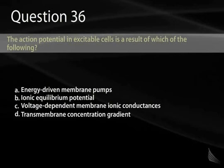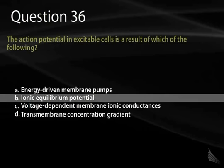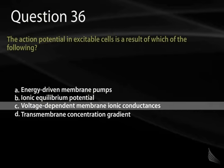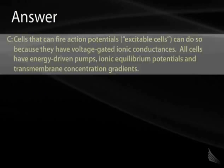Question 36. The action potential in excitable cells is a result of which of the following? A, energy-driven membrane pumps. B, ionic equilibrium potential. C, voltage-dependent membrane ionic conductances. Or D, transmembrane concentration gradients? The correct answer is C. Excitable cells are excitable specifically because they have voltage-gated sodium channels, which are found only on skeletal muscle, cardiac muscle, and neurons. The other three options — energy-driven pumps, ionic equilibrium potentials, and transmembrane concentration gradients — exist in all cell types regardless of excitability.